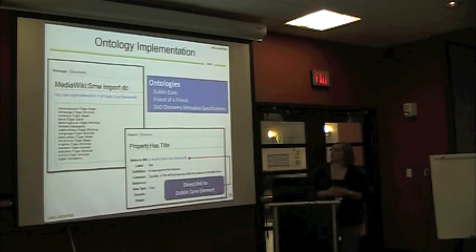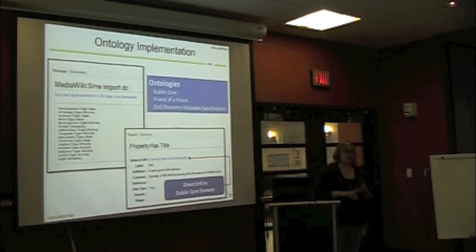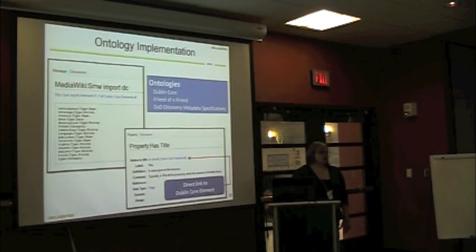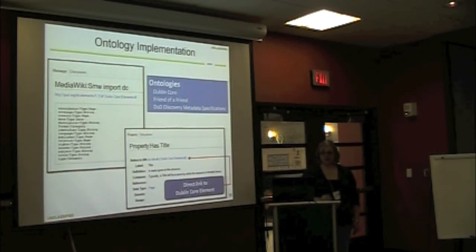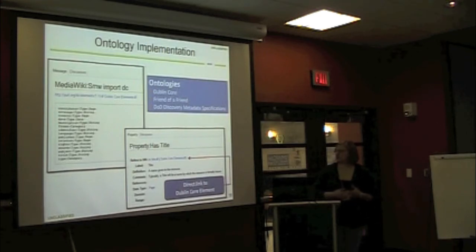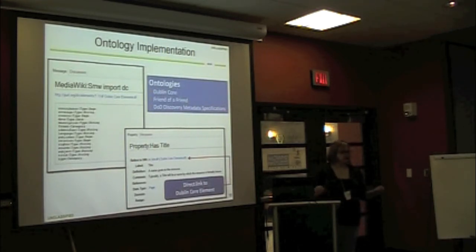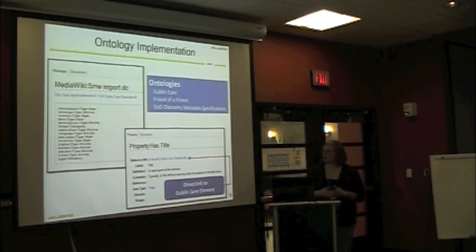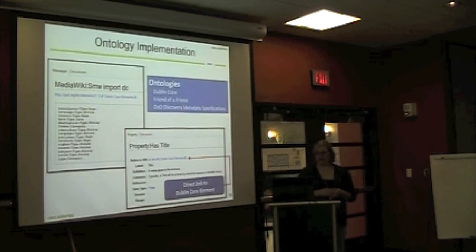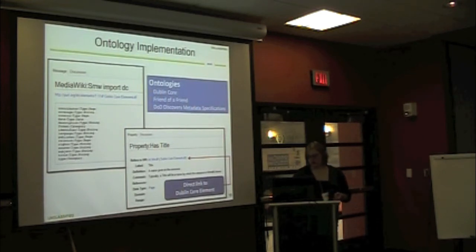And here are the three ontologies that we use. We use Dublin Core, FOAF, and the DDMS. The DDMS is the DoD Discovery Metadata Specification, which is basically the Dublin Core with some added classification metadata elements in it. It's pretty much just the same. The Dublin Core is really a lot nicer, it's a lot cleaner. The documentation is a lot better. You can see just a little screenshot of how that interacts and directly links to the Dublin Core element.